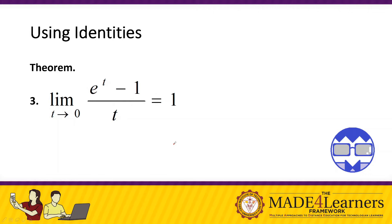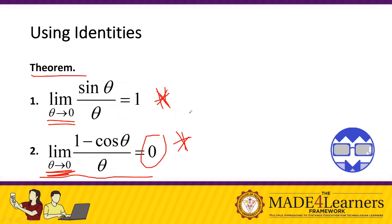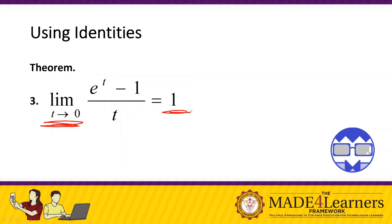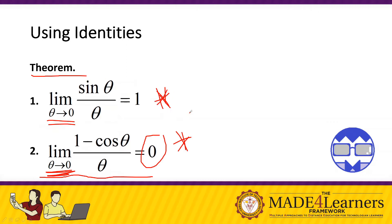Theorem number three: e to the power of t minus one over t as t approaches zero equals one. So to summarize: sine theta over theta as theta approaches zero equals one; one minus cos theta over theta as theta approaches zero equals zero; and e to the t minus one over t equals one. Let's use a table of values to prove these theorems.